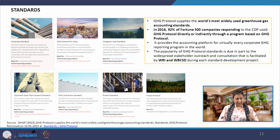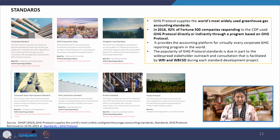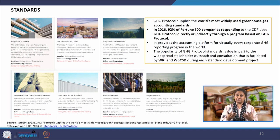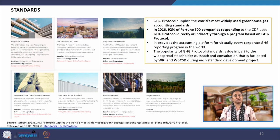Then we have the policy and action standard, which provides a standardized approach for formulating policy for reducing GHG emissions. Governments and companies have to formulate policies to achieve their GHG reduction targets, and this standard provides a standardized framework on how to define and formulate those policies. The product standard can be used to understand the full life cycle emissions of a product and focus on the greatest GHG reduction opportunities. There are different products with different activities required for manufacturing — which activities require specific focus to reduce GHG emissions is what this standard deals with.